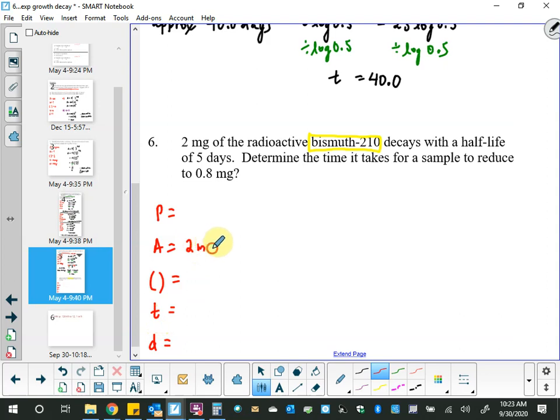So, here's my list. So, two milligrams of the radioactive bismuth 210 decays with a half-life of five days. So, I start with two milligrams. Start with two milligrams. It's decaying with a half-life. And it takes... We're going to end up with this amount. Also in milligrams, so that's handy. And it takes five days to do what it's doing. And my question is, determine the time it takes.